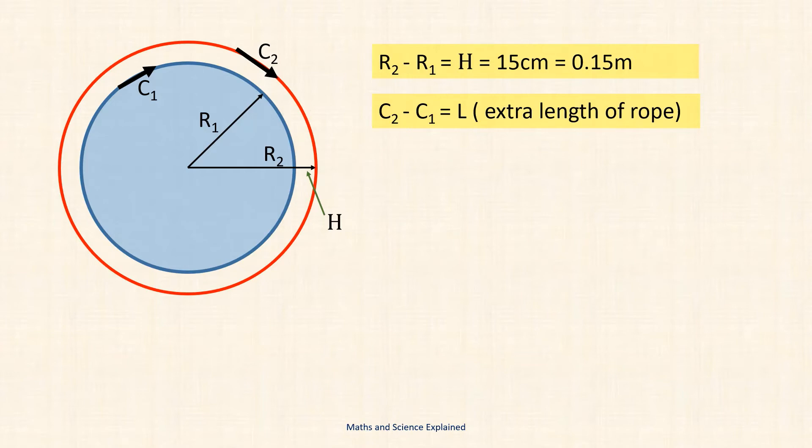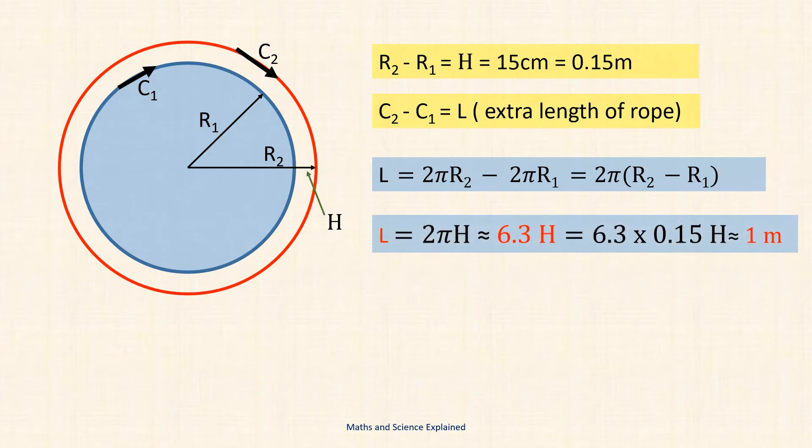Now the circumference of a circle is given by the term 2π times R where π has the value of approximately 3.14. Putting this in tells us that L is given by 2π times the difference in the radii which we already know is the height H. Thus L is equal to 2π times H or approximately 6.3 times H. Now as H is 0.15 meters we get a length of approximately 1 meter for the extra length of rope that would be required in order to encircle the earth's circumference at a height of 15 centimeters above the ground instead of at ground level.